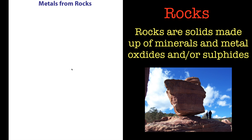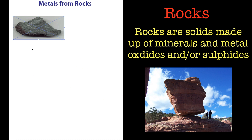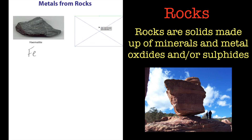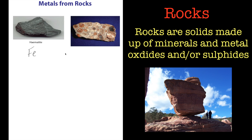Some of the typical rocks we have in the world are things like hematite - that's an iron ore, so that's the source of iron. Then you've got bauxite, which is another rock, and that's a source of aluminium.